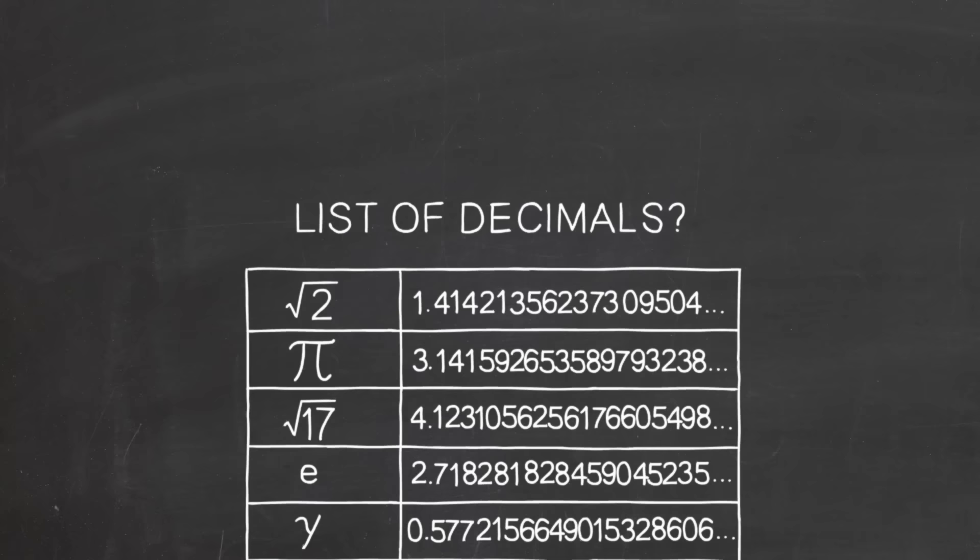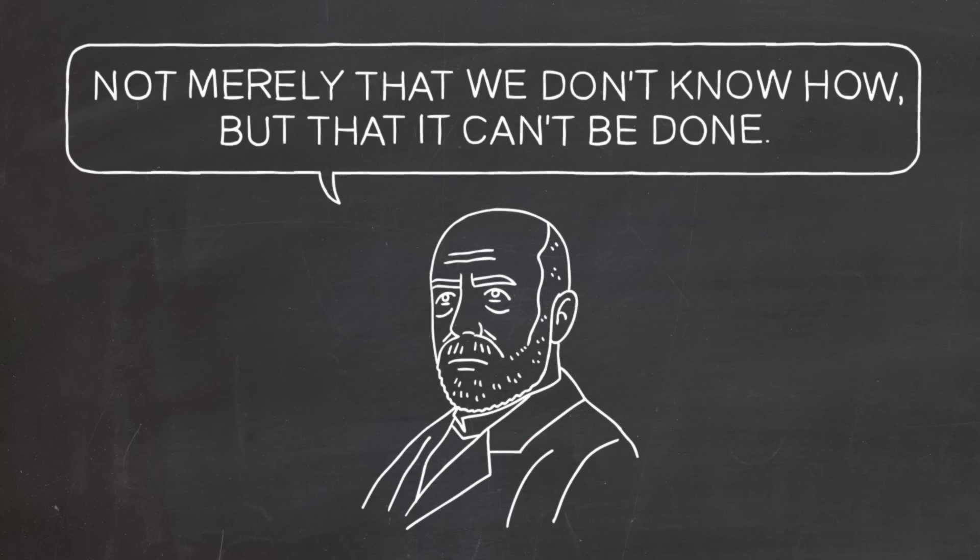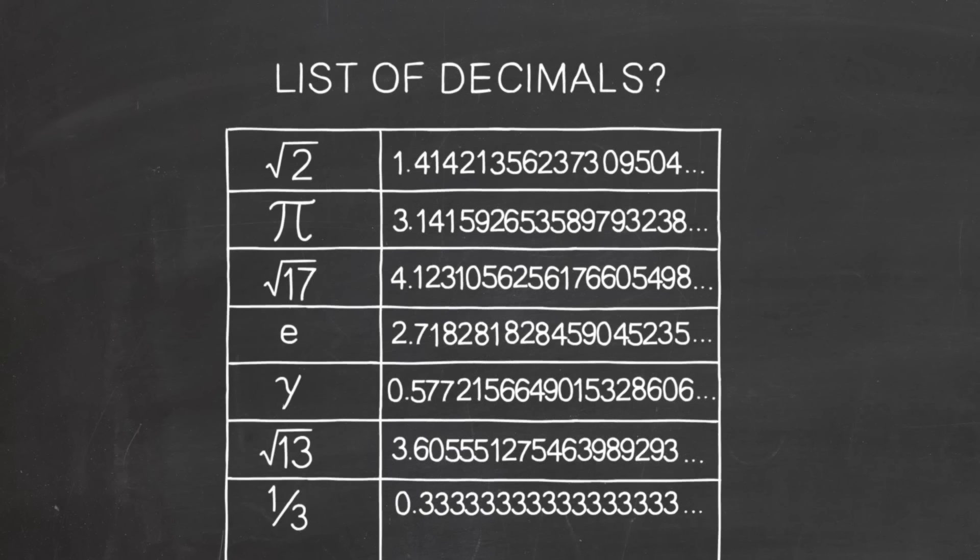So, can we make a one-to-one match between the whole numbers and the set of all the decimals, both the rationals and the irrationals? That is, can we make a list of all the decimal numbers? Cantor showed that you can't, not merely that we don't know how, but that it can't be done.